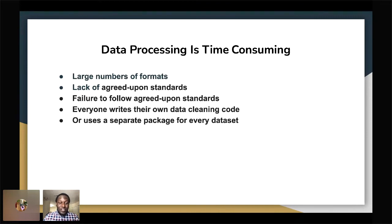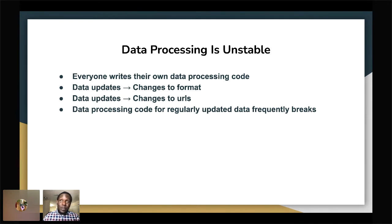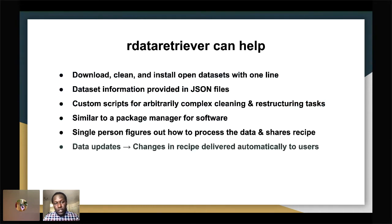Software always breaks — I always say it grows by night. Data processing is also unstable: everyone writes their own code, but data updates can change formats, or a URL may have moved. For example, recently people have been moving their data packages on GitHub from master to main. So the data processing code for regularly updated data frequently breaks, which is really frustrating because it can bring down your whole pipeline.